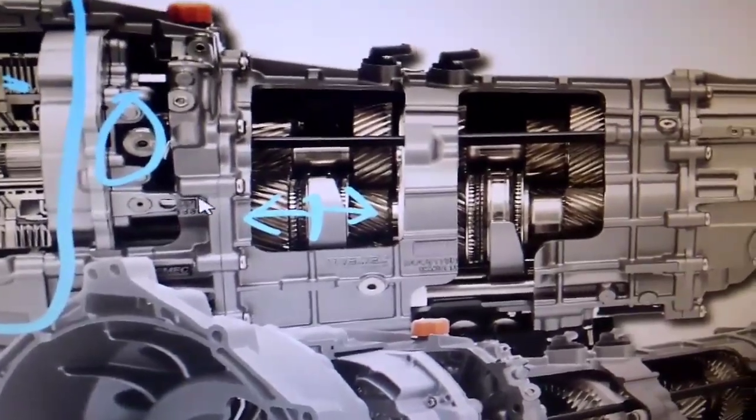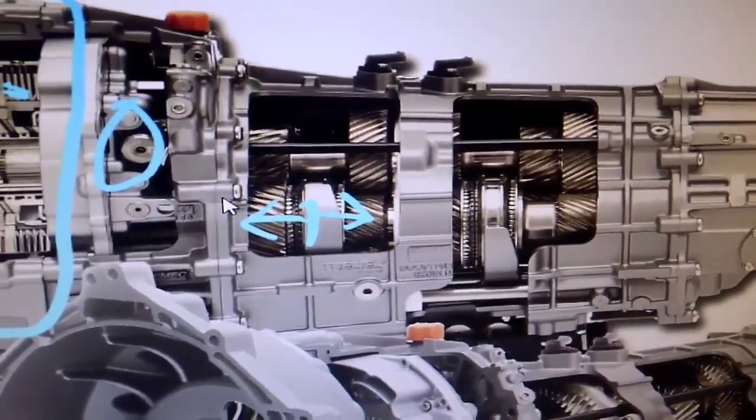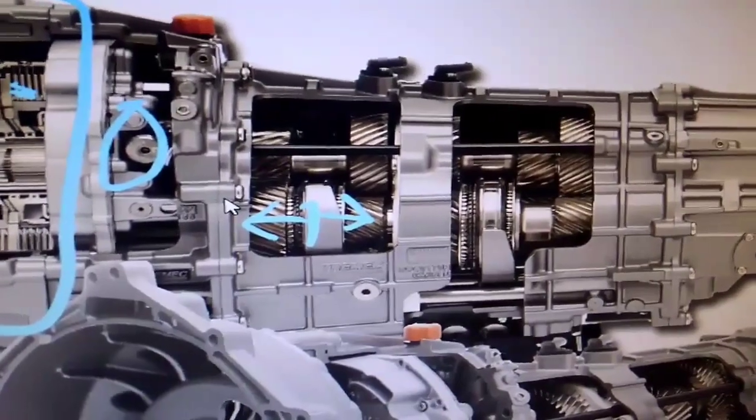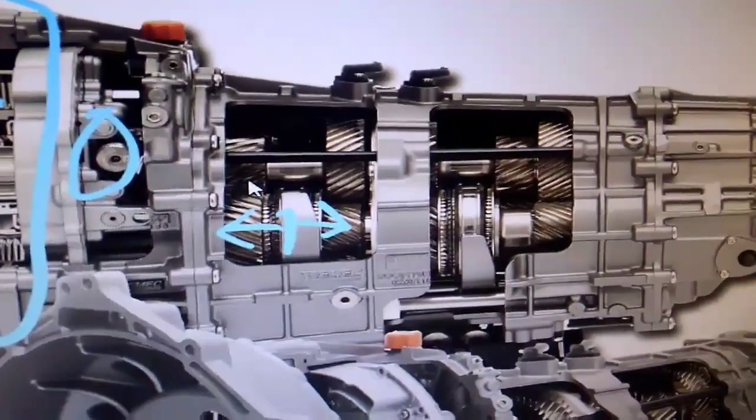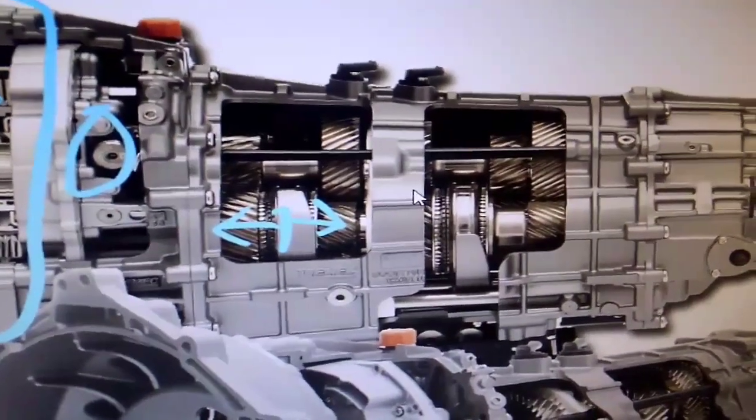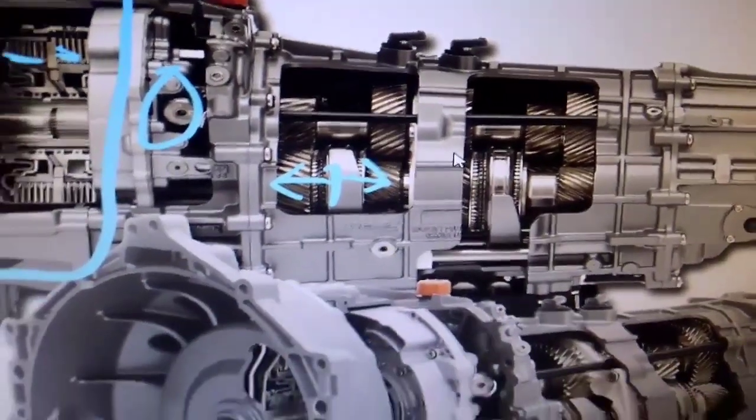Now, look, this is how dual clutches work. Think of it as two transmissions with four gears per shaft. Now, this one is an actual seven speed, but the principle still remains the same.